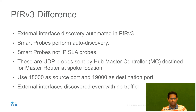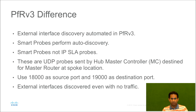In performance routing version 3, one of the features that have been introduced is the ability to automate this discovery process. This is done by using smart probes which perform auto-discovery of the interfaces on all spoke sites. These are not to be confused with IPSLA probes. They are normal UDP packets which use 18000 as the source port and 19000 as the destination port number. These are sent by the hub master controller and they are destined for the master router at the spoke location. Even when there is no traffic flowing between the hub site and the remote site, these external interfaces can still be discovered.